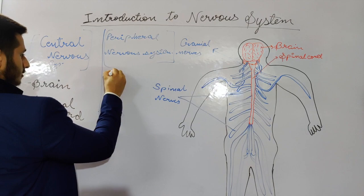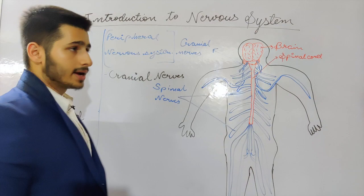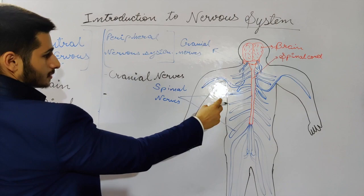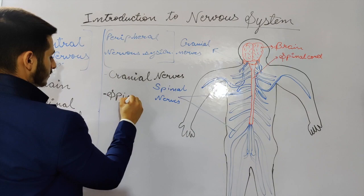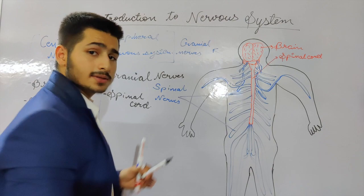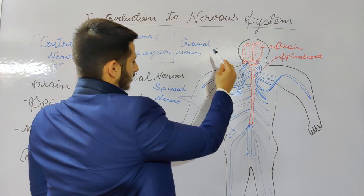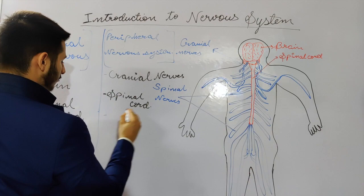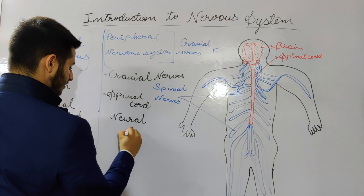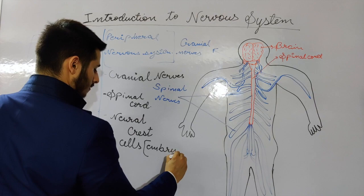The structures included in the PNS are cranial nerves, which arise from the cranium or the brain, and spinal nerves, which arise from the spinal cord. These structures lie outside the CNS and connect the brain and spinal cord to the rest of the body through these nerves. They develop from neural crest cells in the embryo.